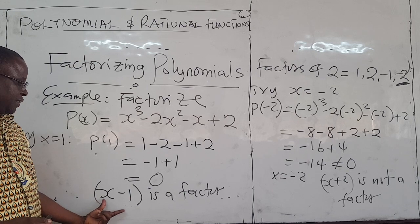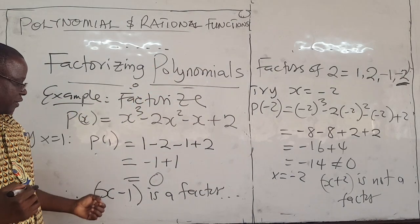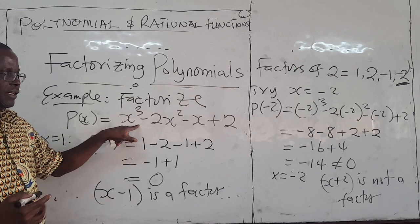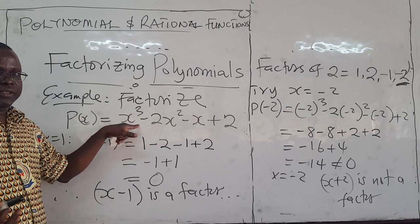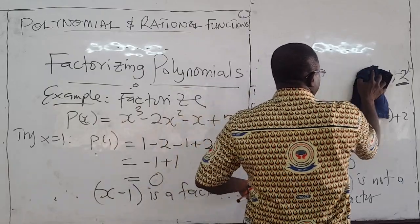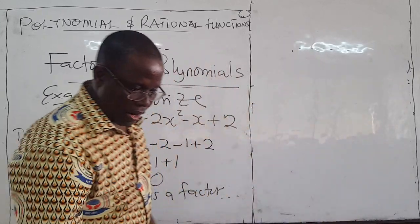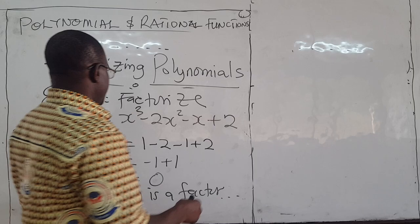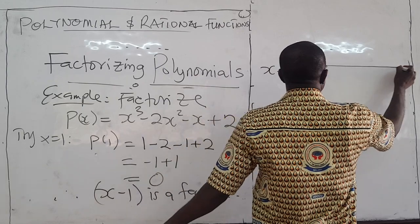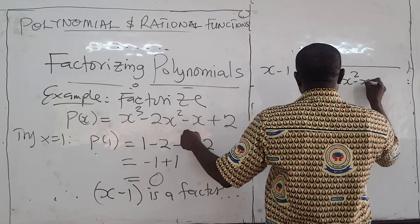Now I know that x minus 1 is a factor. I don't necessarily have to try the other ones. What I can do now is use long division — take the polynomial and divide by x minus 1. That will help me get the other factors. So I take x cubed minus 2x squared minus x plus 2 and divide by x minus 1, giving x squared minus x plus 2.